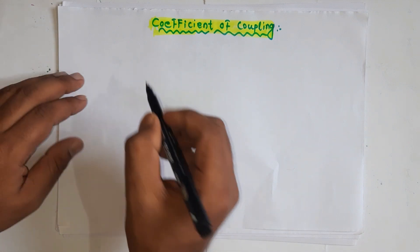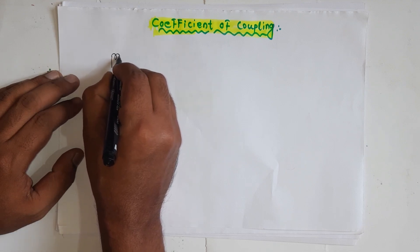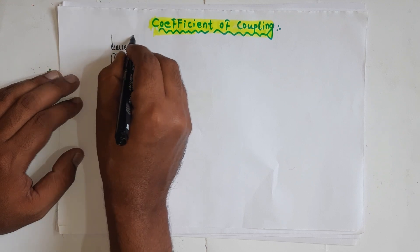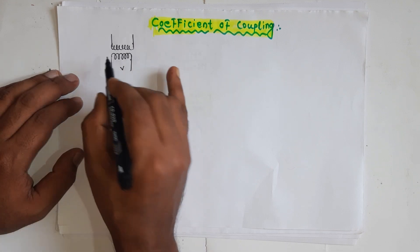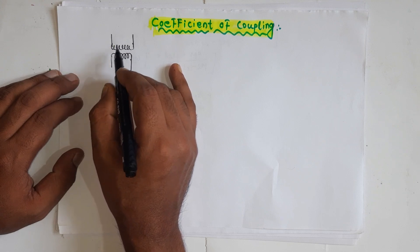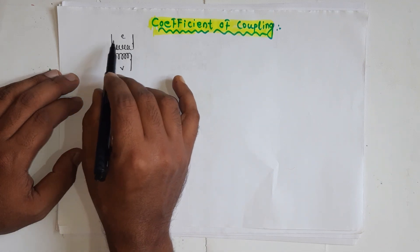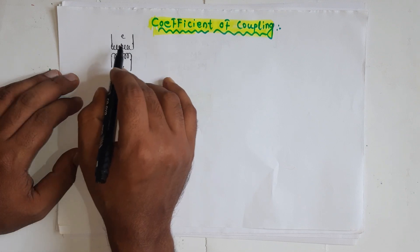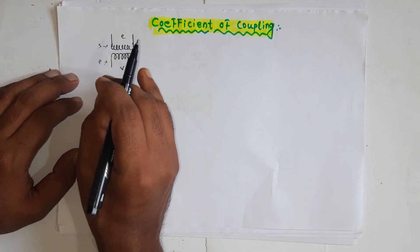In the case of mutual inductance or a coupled circuit, if we give supply to one winding or one coil, it produces some magnetic field. Due to this magnetic field, the magnetic flux links with the next coil. When the magnetic flux links the next coil, an EMF is induced in that coil. How much EMF is induced depends upon what amount of magnetic flux links to that secondary winding.